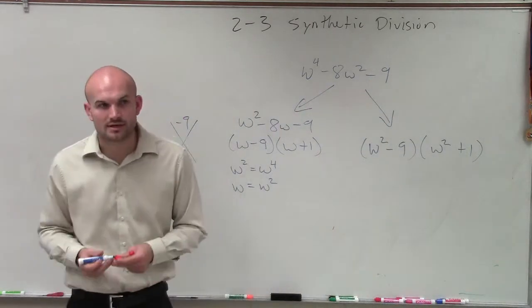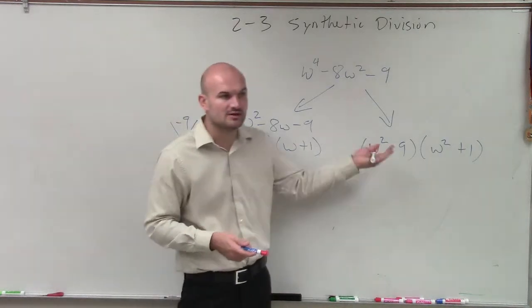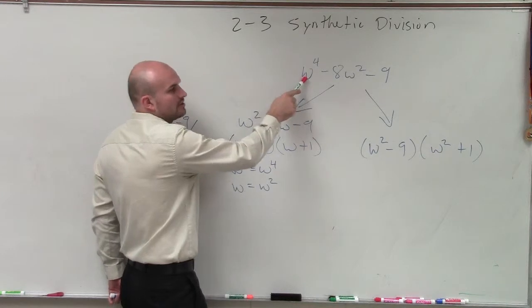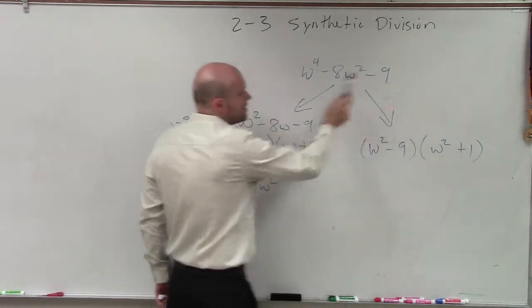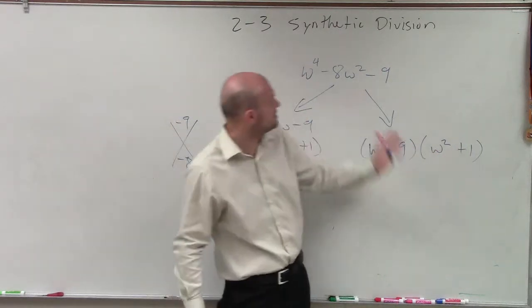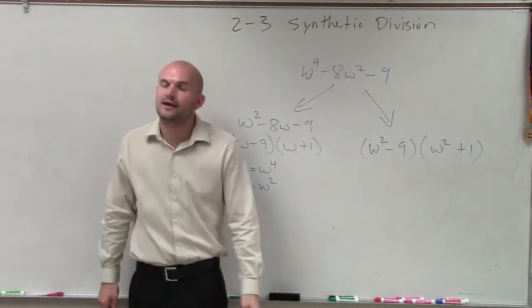How do you check factoring if you did it correctly? Multiply it. Does w squared times w squared give you w to the 4th? Yes. Does negative 9 times 1 give you negative 9? Yes. Does negative 9 times w squared plus w squared times 1 give you negative 8w squared? Yes.